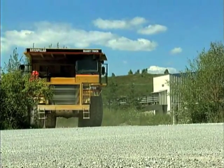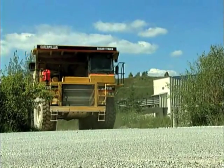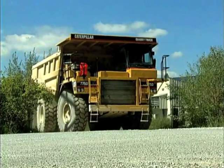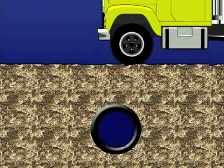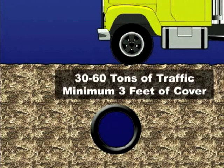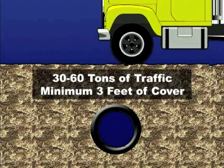If construction equipment used in the trench area weighs more than 25 tons, additional minimum cover is required. For areas receiving heavy construction traffic between 30 and 60 tons, a minimum 3 feet of cover is required. Heavier equipment will require additional cover. If sufficient cover is not provided, mound and compact material over the pipe to provide the minimum cover needed during construction.